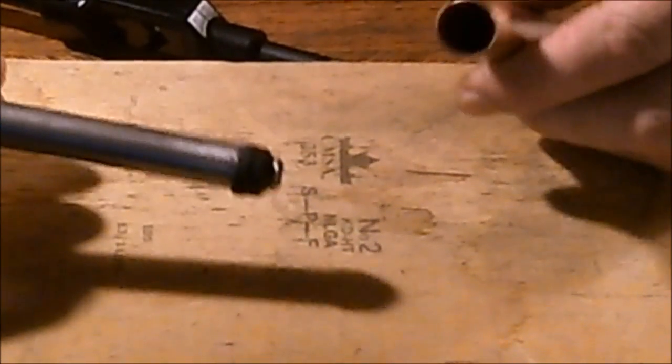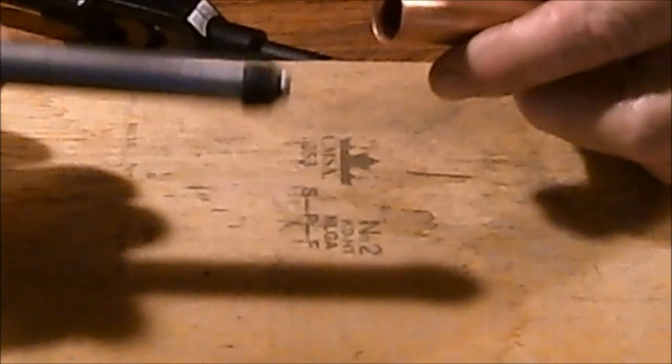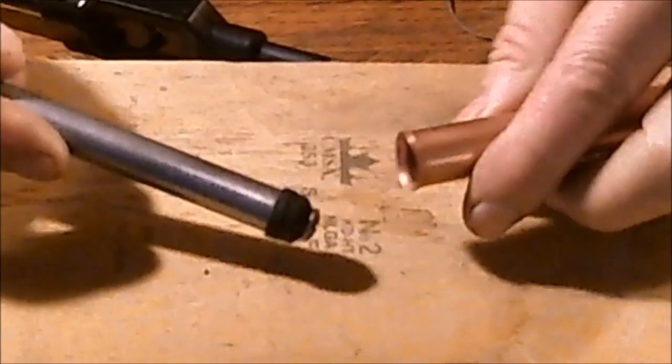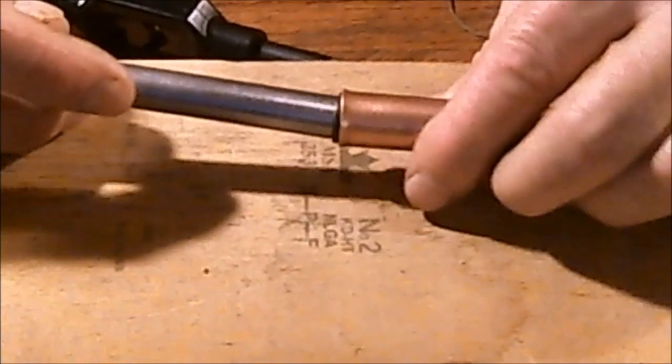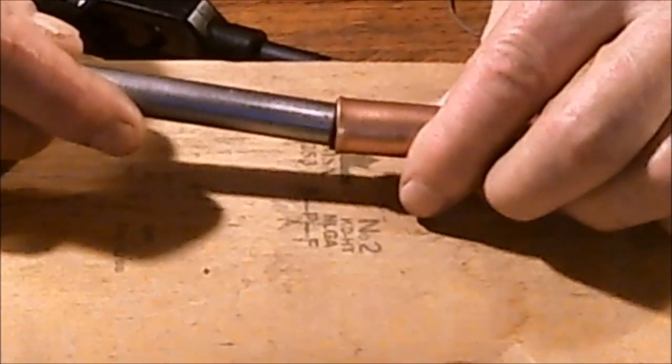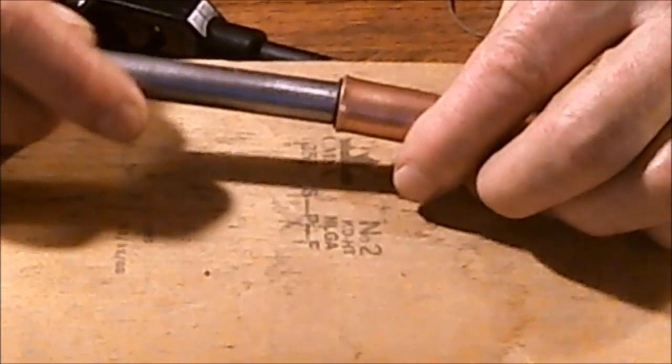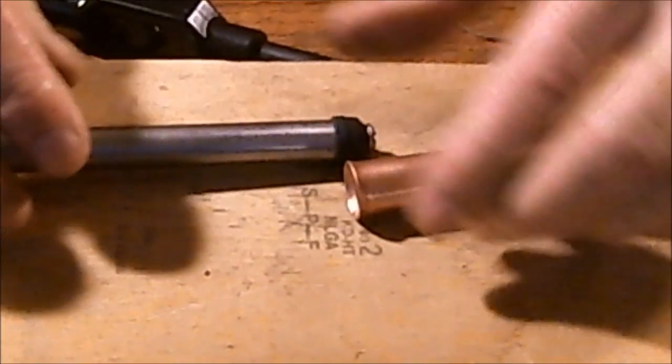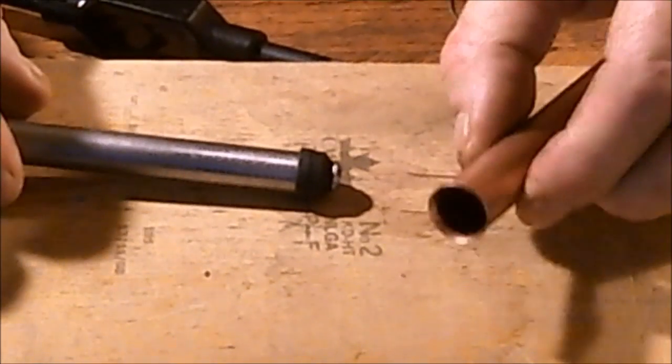Now the reason you want the flare on the end of it is when you go to insert it, so you don't nick your washers. Because if you nick your washers you won't have any compression and you'll just be going through it and making another stack of washers on it unnecessarily. So put your flare on the end and do yourself a favor.